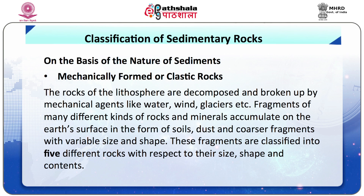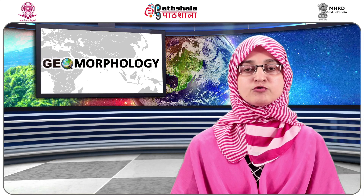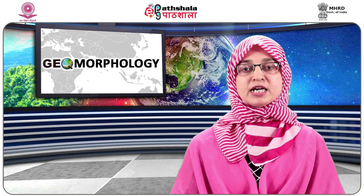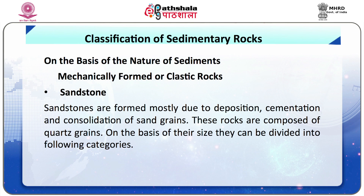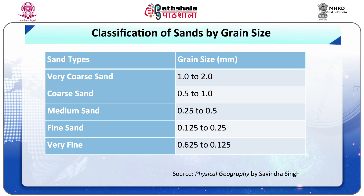Classification of sedimentary rocks. Number 1: on the basis of the nature of sediments. Number 1: Mechanically formed or clastic rocks — rocks of the lithosphere are decomposed and broken up by mechanical agents like water, wind, glaciers, etc. Fragments of many different kinds of rocks and minerals accumulate on the earth's surface as soils, dust and coarser fragments of variable size and shape. These fragments are classified into five different types with respect to their size, shape and contents. Number 1: Sandstones are formed mostly due to deposition, cementation and consolidation of sand grains. These rocks are composed of quartz grains and can be divided into categories based on grain size. Table 1 shows the classification of sands by grain size.